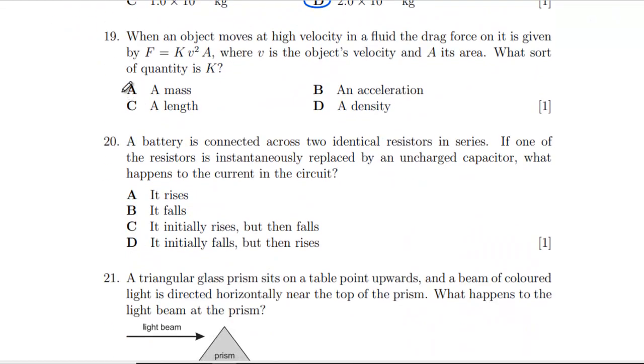Question 19: When an object moves at high velocity in a fluid, the drag force on it is given by this equation. What sort of quantity is K? K is going to be our force, so that's kilograms meters second to the minus 2, divided by velocity squared, so meters squared second to the minus 2, and then area, so meters squared. That's going to cancel, so it's kilograms per meter cubed, which is a density.